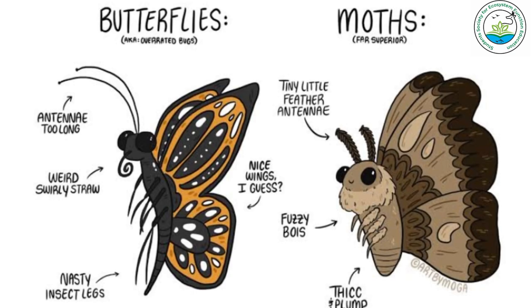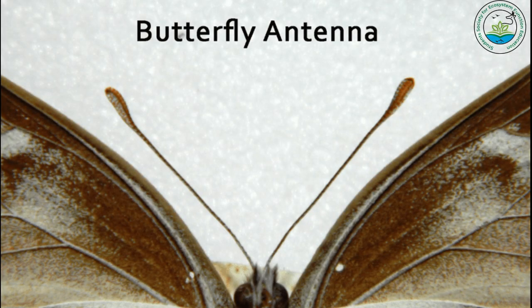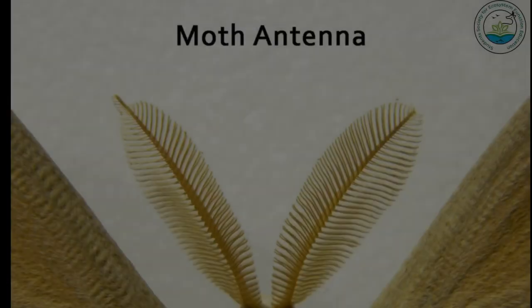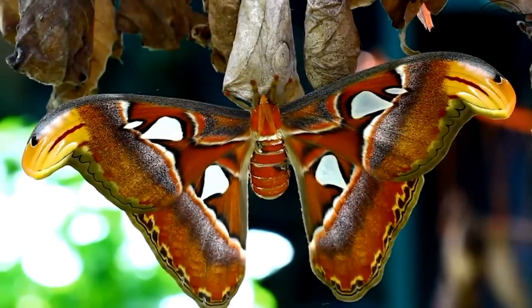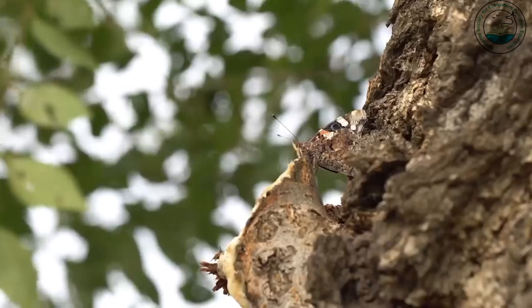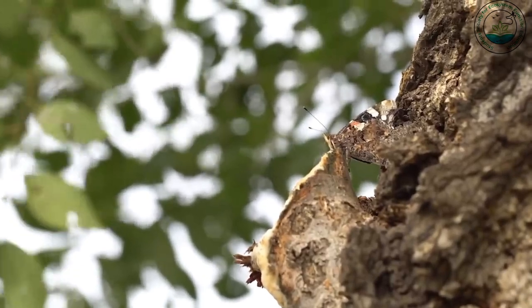One of the key differences between moth and butterfly is their antennae. Butterflies have cylindrical antennae with club-like tips, while moths typically have feathery or comb-like antennae, which help them detect pheromones and navigate in the dark.